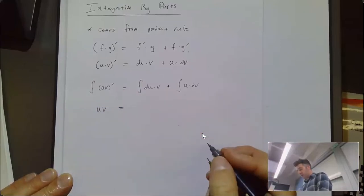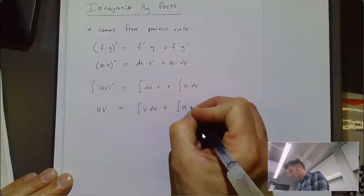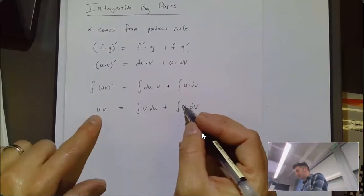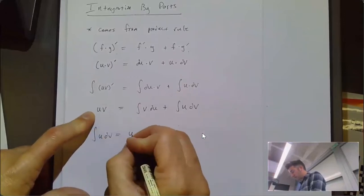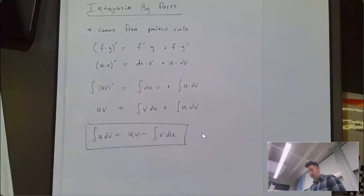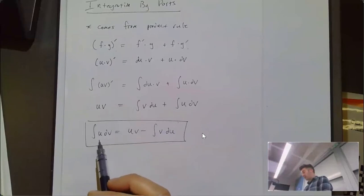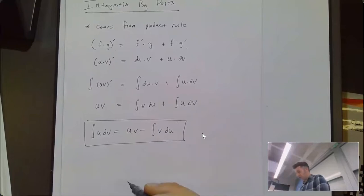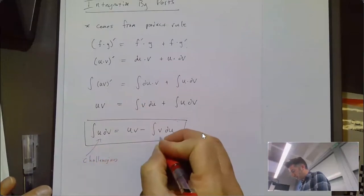Rewriting the right-hand side, that's going to be the integral of v du plus the integral of u dv. Isolating the integral of u dv, we get: the integral of u dv equals u times v minus the integral of v du. That is our integration by parts rule. We start with an integral of u dv, which is challenging, rewrite it as uv minus the integral of v du, hoping that integral is easier to deal with.